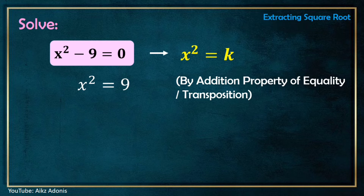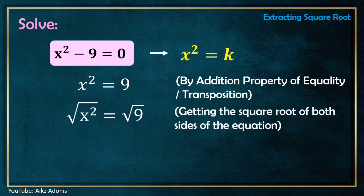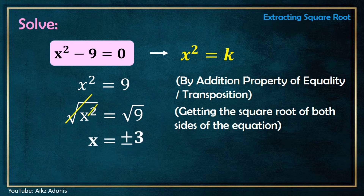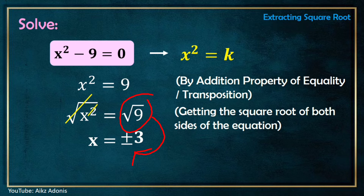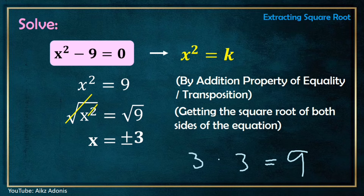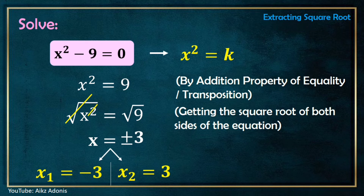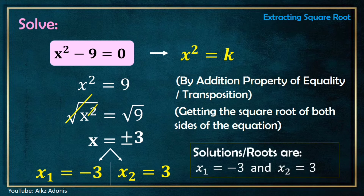Now the equation is in the form x² = k. We can get the square root of both sides: the square root of x² equals the square root of 9. Simplifying, the square root of x² is x, and the square root of 9 is positive or negative 3, because 3 × 3 = 9. Hence, the solutions of x² − 9 = 0 are x₁ = −3 and x₂ = 3.